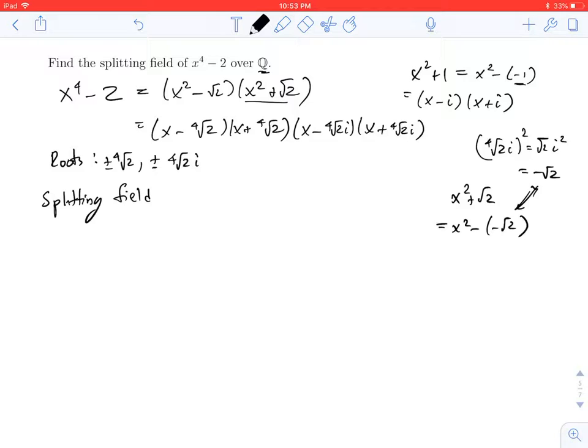So the splitting field of x to the fourth minus 2 over Q is you take Q, and you're going to adjoin plus or minus the fourth root of 2 plus or minus the fourth root of 2 times i. Now, this is not as efficient as it could be.